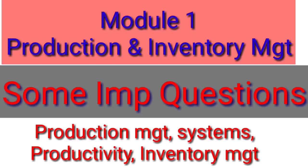To summarize Module 1: inventory management techniques and the production system are very important. Also cover the importance of production management and the scope of the management system — questions are usually asked on that basis. Module 1 covers production management, production planning and control, and inventory management. Keep all these things properly so there are no problems solving Question 2 from Module 1.